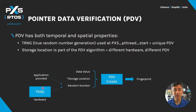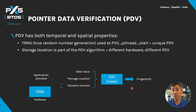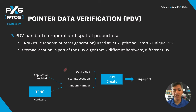When you use a TRNG, no two executions of the program will get the same number, so even if a hacker finds out the verification code, next time the system boots it will be different. PDV also uses the storage location as part of the fingerprint, which will be different for each customer device as well as each firmware image.